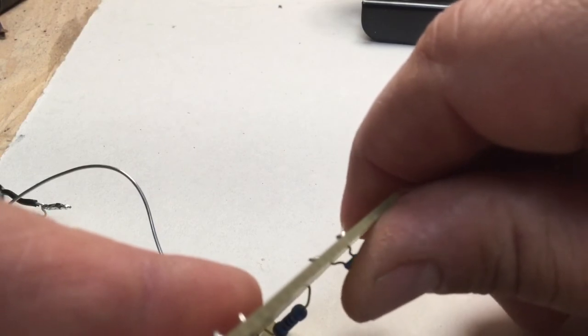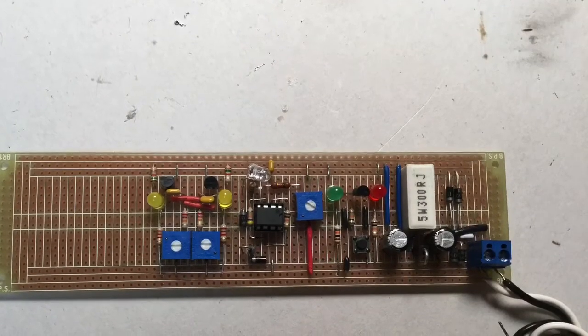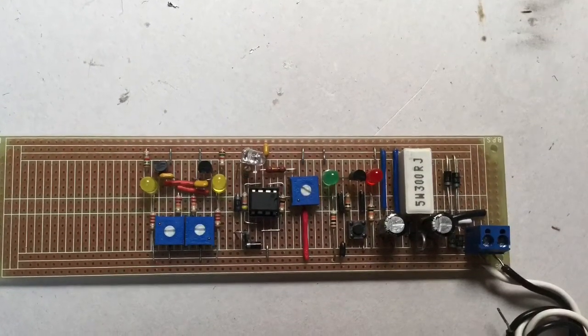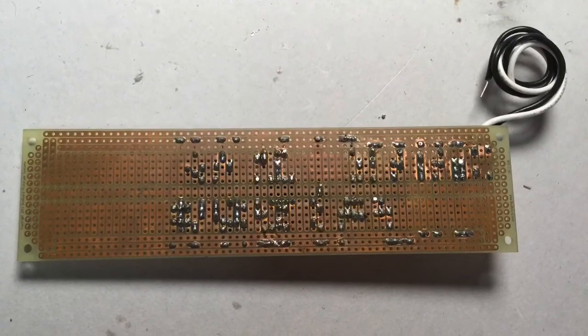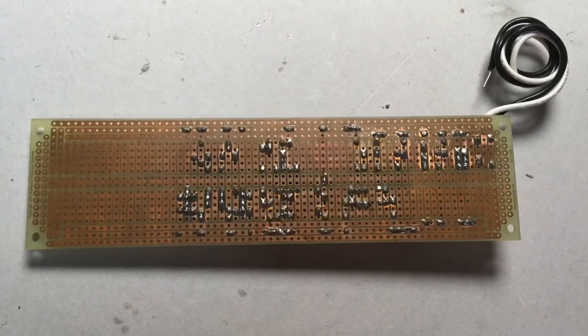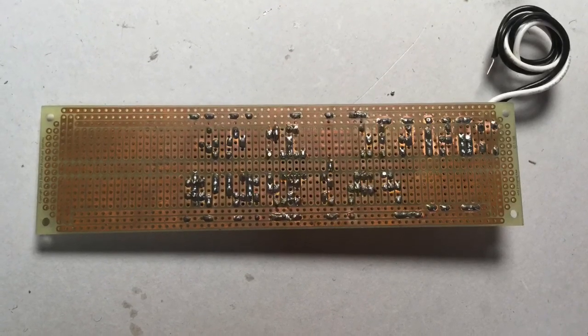It is also very important that we align and organize all of our components in as neat of a manner as possible. That way it's very clear and easy to see if there was a troubleshooting problem. As you can see here in this example, we have a very clean and neatly organized board, so if there was any sort of trouble, we can identify it almost immediately.